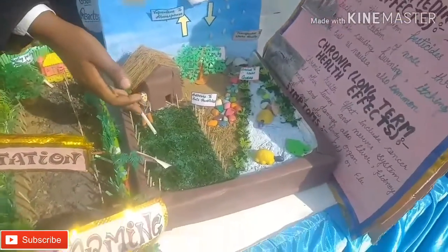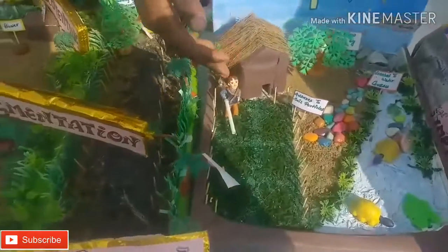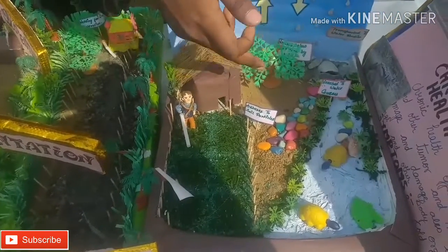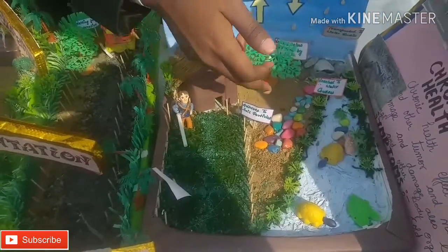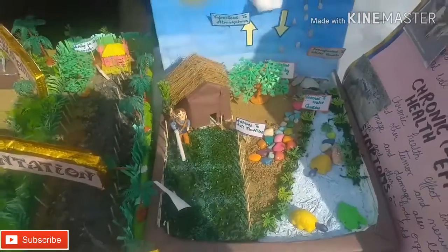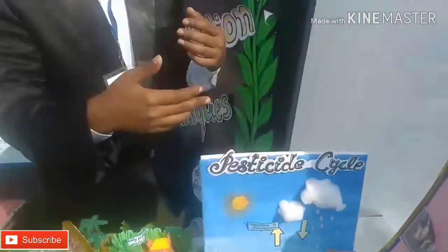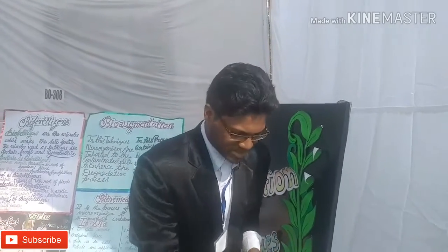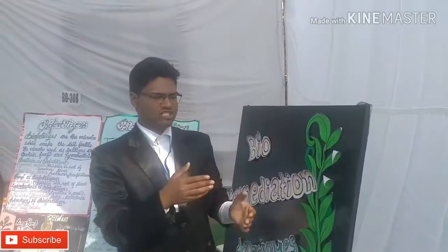Here, farmers are putting pesticides in the farmland. From the farmland, it goes to the soil. From the soil, it goes to the water. From there, it goes to the atmosphere by the process of evaporation and comes down in the form of rain, affecting the life of animals and humans. In humans, it causes acute and chronic diseases.